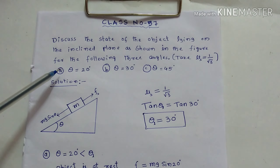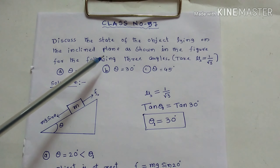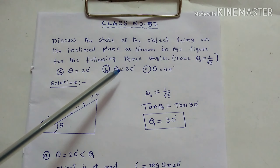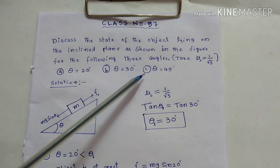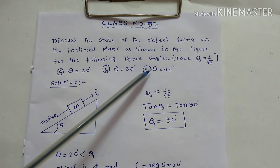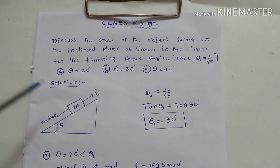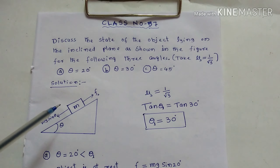For question A, theta is equal to 20 degrees. Question B, theta equal to 30 degrees. Question C, theta is equal to 45 degrees.